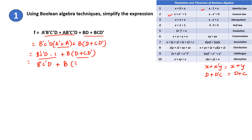So D plus C. Then B'C'D plus, now apply the distributive law. You will get BD plus BC.